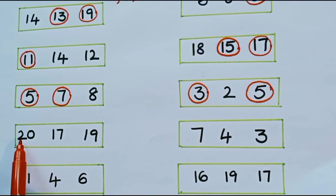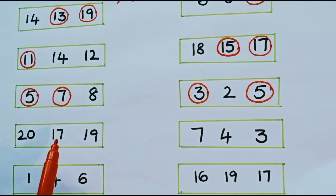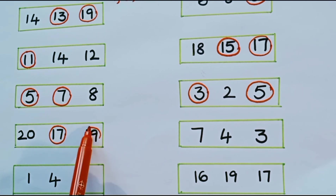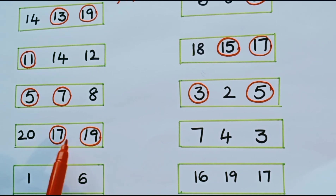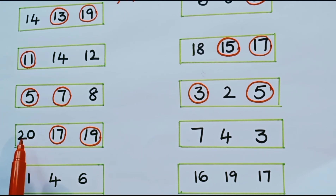What are the numbers in the next row? 20, 17, and 19. What are the odd numbers? 17 and 19. Both numbers are ending with odd numbers — 7 and 9. Is 20 an odd number? No, it is an even number because it ends with 0, and 0 is an even number.